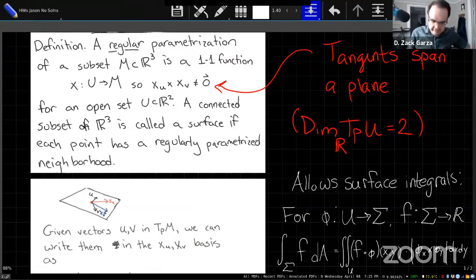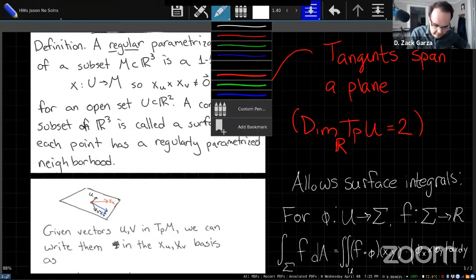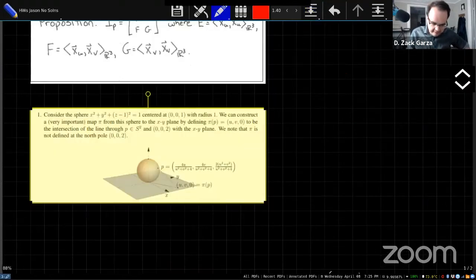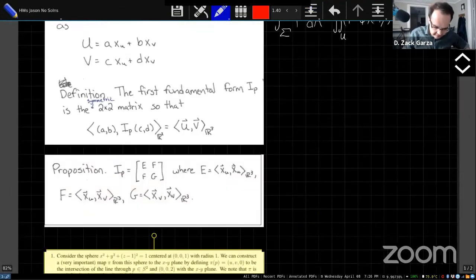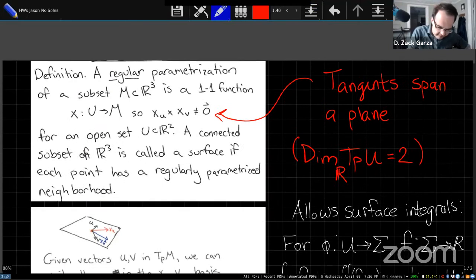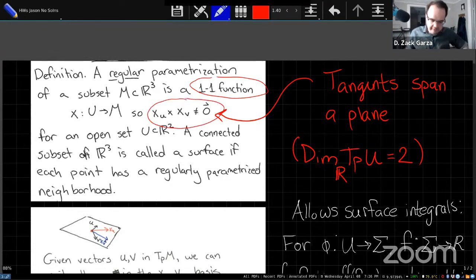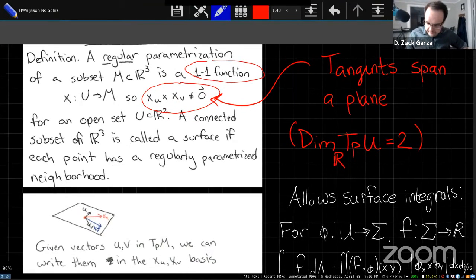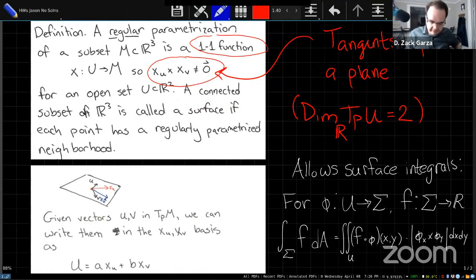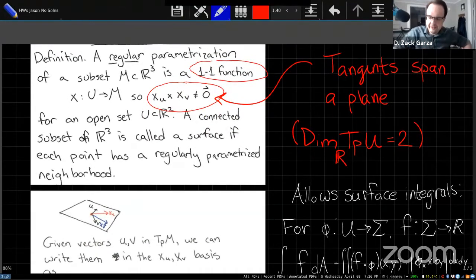One thing to note about this definition, coming straight from Jason's notes, there are two things here that will be important to us momentarily. One is that it is a one-to-one function, and then two is this condition on cross product of these tangent vectors not being zero. At least my motivation for why we do this is that the tangent vectors at each point will span a plane. In other words, the dimension of this tangent space is going to everywhere be two.